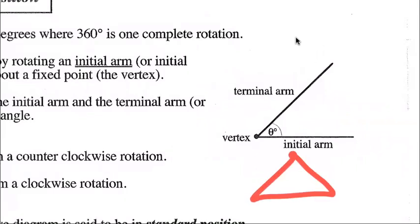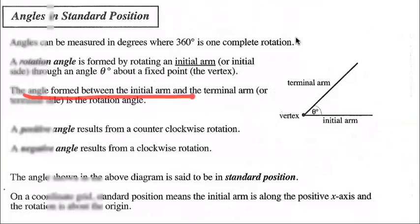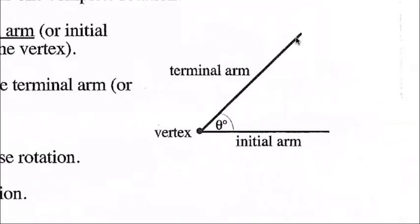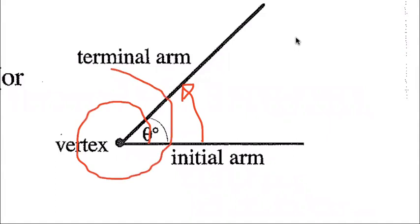Any corner is called a vertex. In a triangle there are three vertices — three different corners. The angle formed between the initial arm and the terminal arm is the rotation angle. The rotation angle goes from where you start to where you end up, and that rotation can go anywhere from zero to 360 degrees — one full rotation — or it can continue going around and around.